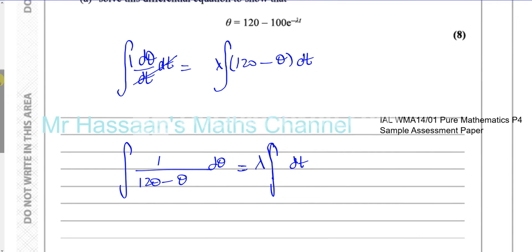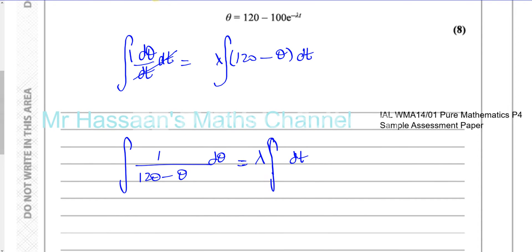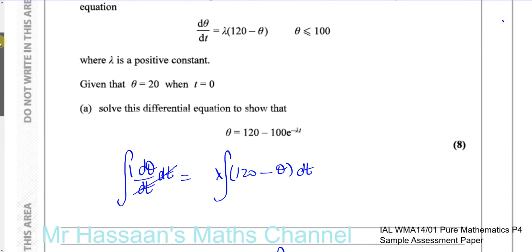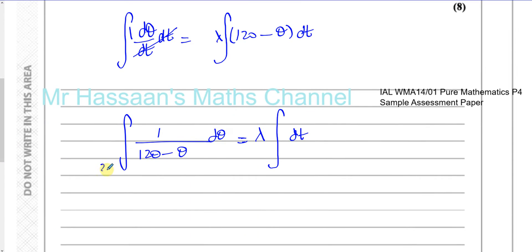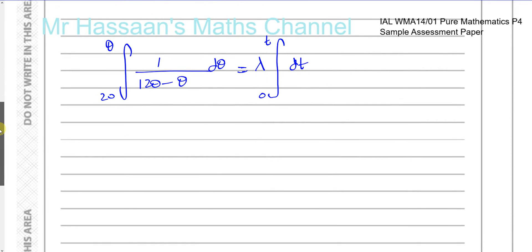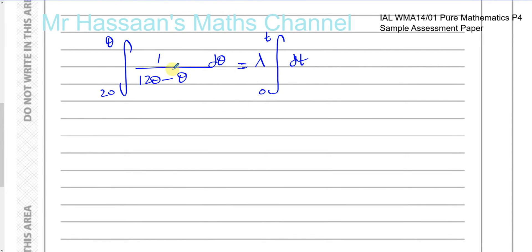There are different ways to proceed, but I prefer to use definite integration with limits when given boundary conditions, because they gave us information to find the constant of integration. They told us that when theta equals 20, t equals 0. So I'll write 20 and 0 as limits. We want to find theta in terms of t. This will automatically give us the constant of integration without any hassle. Now let's integrate both sides accordingly.